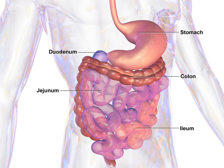Cells of the GI tract release hormones to help regulate the digestive process. These digestive hormones, including gastrin, secretin, cholecystokinin, and ghrelin, are mediated through either intracrine or autocrine mechanisms, indicating that the cells releasing these hormones are conserved structures throughout evolution.